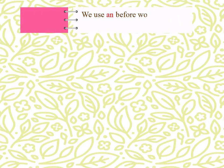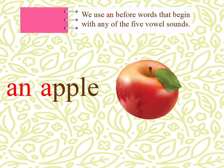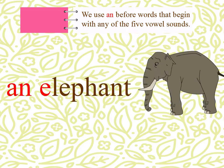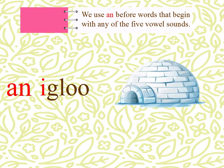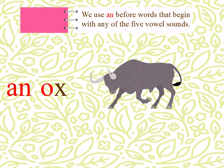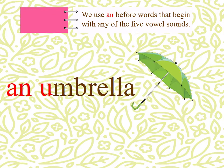We use AN before words that begin with any of the five vowel sounds. AN apple, AN elephant, AN igloo, AN ox, AN umbrella.